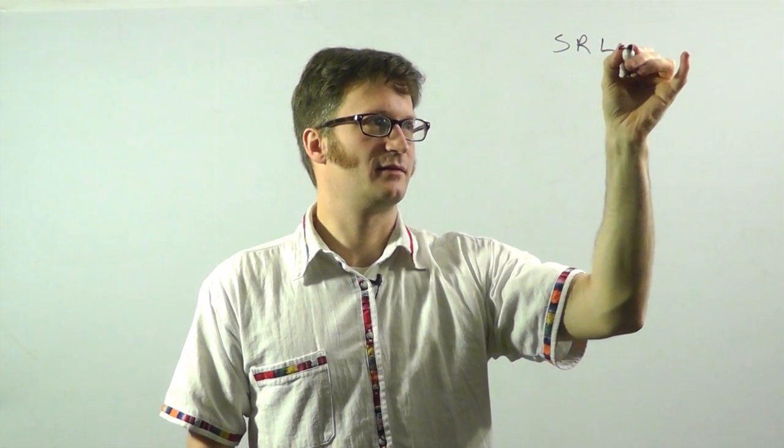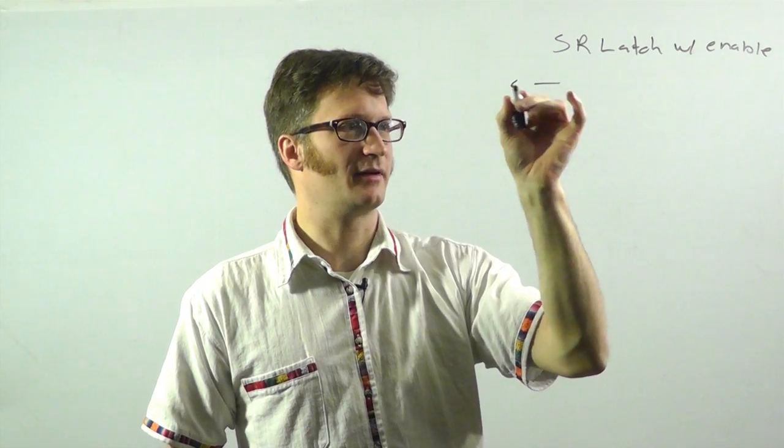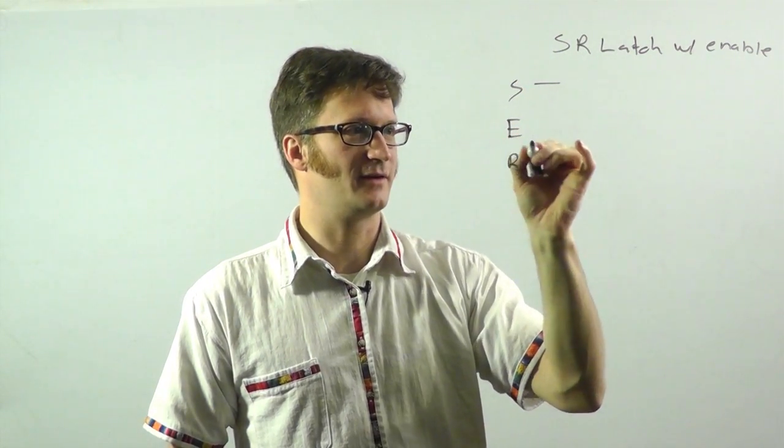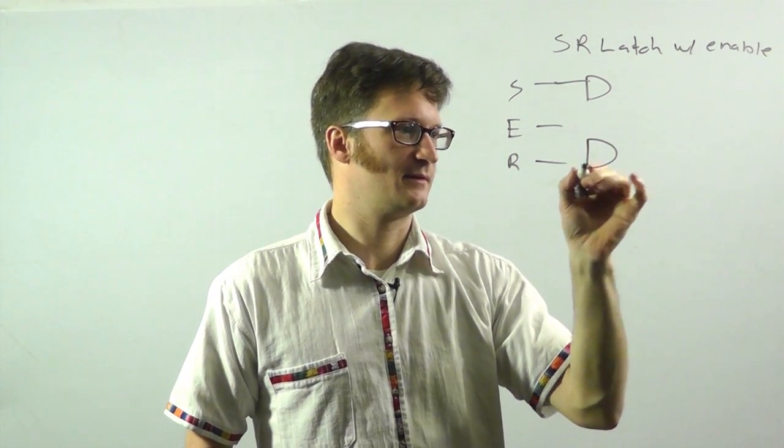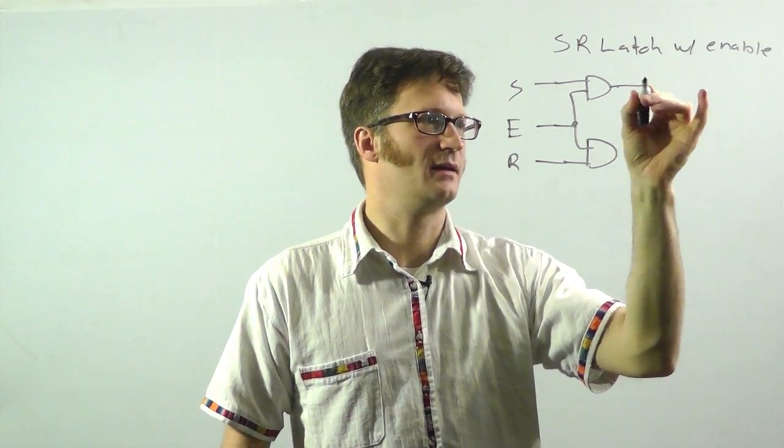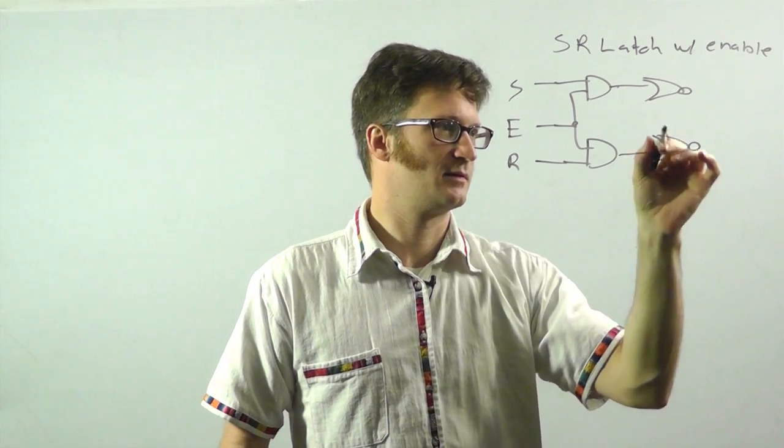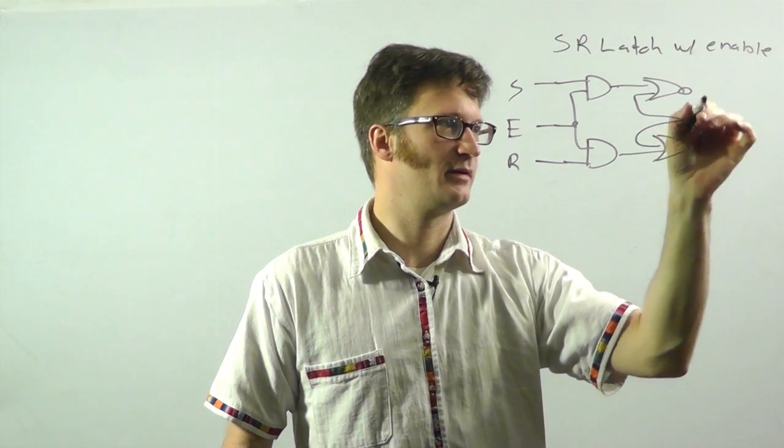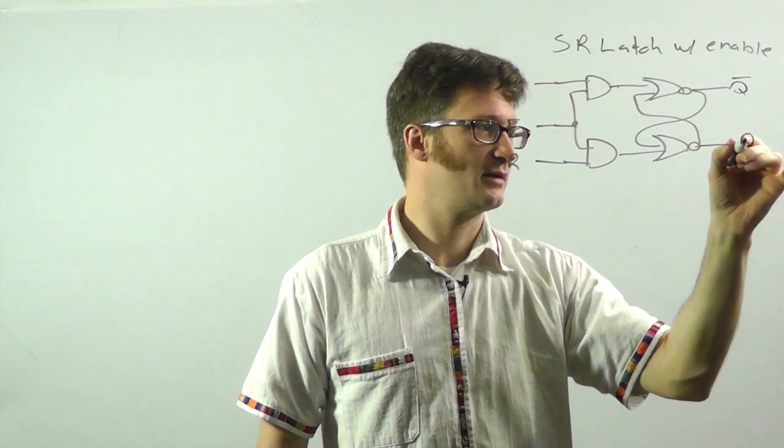Now we're going to look at an SR latch with enable. The way that we make that up is that we have our set, reset, and now we have E for enable. We run these into AND gates like that, and then we go into the regular SR latch. It is cross-coupled. Q bar is still up here, Q is down here.